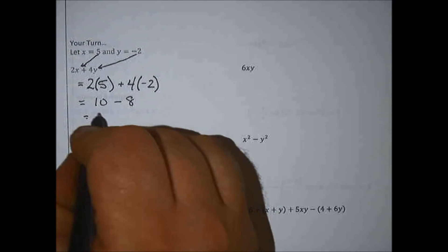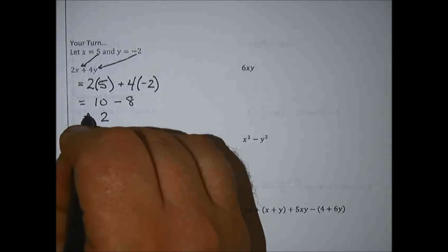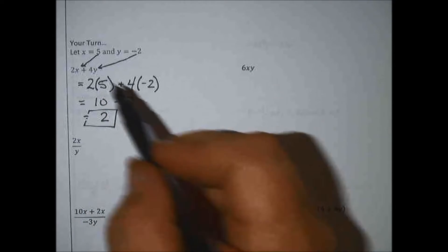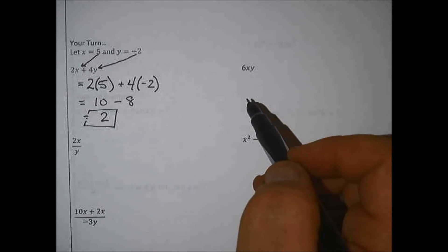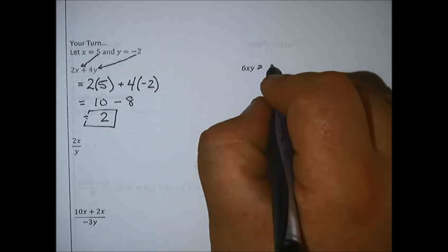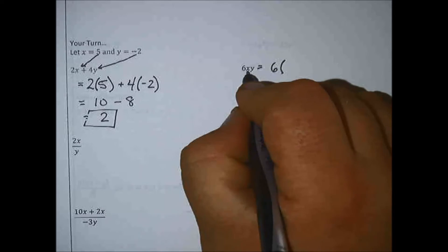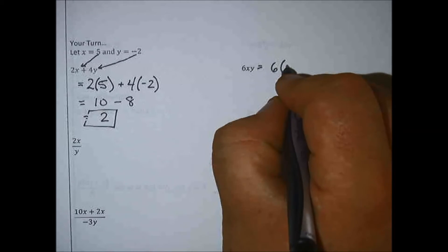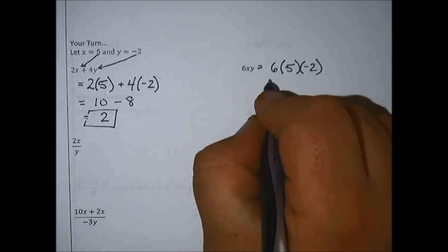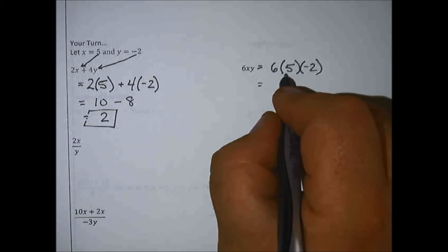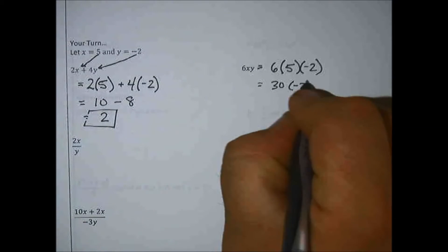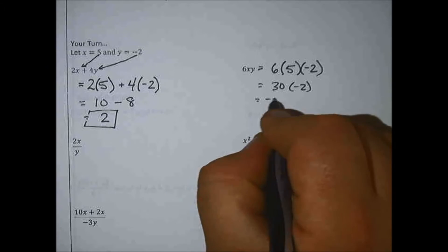We follow order of operations: we had multiplication and now we're doing subtraction. Ten minus 8 is 2. So we're getting a single value out of something that looked somewhat complicated. Next, I have 6 times x times y, so 6 times 5 times negative 2. Going from left to right: 6 times 5 is 30, times negative 2 is negative 60.